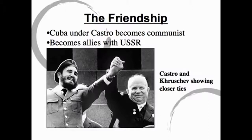Cuba had had a dictator named Fulgencio Batista since the 1940s. He was pretty unpopular with the masses of Cuban people, and in 1959 a young man named Fidel Castro led the Cuban rebellion to overthrow Batista. Castro promised people freedom, food, etc., and was able to take over.